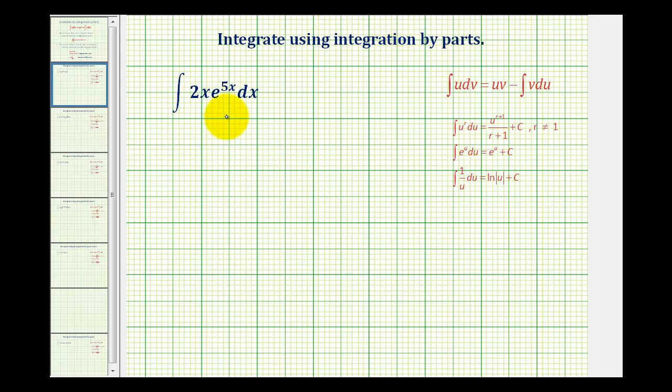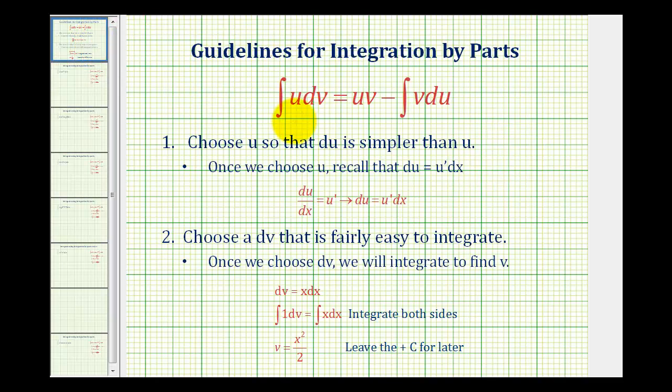So now let's go ahead and review the guidelines for integration by parts. Here's the formula for integration by parts, where the integral of u dv is the given integral, and we want to write it in the form of u times v minus the integral of v times du.